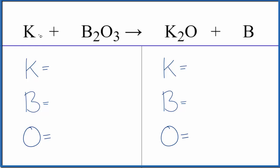To balance it, we count the atoms up. One potassium, two borons, and three oxygens. In the products, we have two potassiums, one boron, and one oxygen.